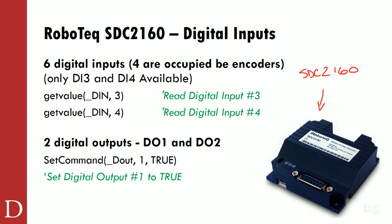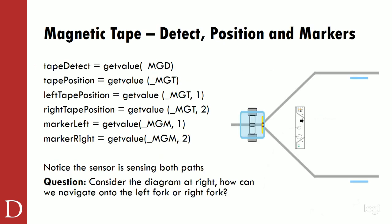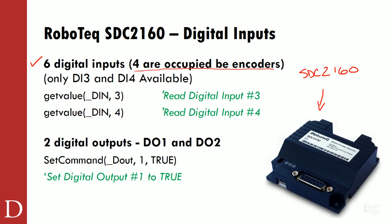On board, we have access to six digital inputs. However, we don't actually have access to all six because we've already occupied digital inputs one, two, five, and six with our motor encoders. Our motor encoders have wires going out to those digital inputs so we can read the encoder value.